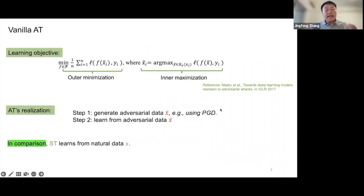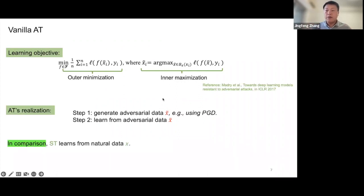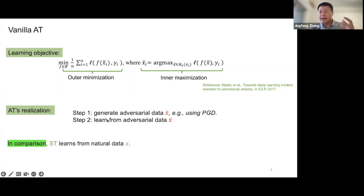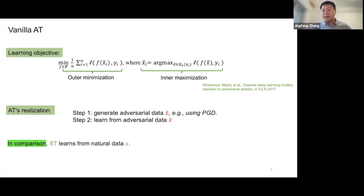The learning objective of vanilla adversarial training is the minimax formulation. Inside there is a maximization, where we use PGD to generate adversarial data within the norm-ball. Outside, there is a minimization, where we find a classifier to fit those generated adversarial data. To realize this learning objective, we use alternating optimization. At each epoch, adversarial training conducts Step 1 — maximize loss of adversarial data using PGD — and Step 2 — minimize the loss on those generated adversarial data. In comparison, standard training only learns from natural data.